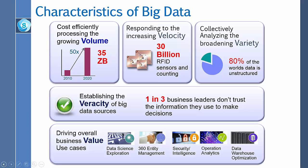The third characteristic is variety — 80% of the world's data is unstructured, and they come from a variety of sources, making this data varied in nature. The fourth is veracity: one in three business leaders don't trust the information they use to make decisions, so accuracy of data is an important factor. Finally, value — driving overall business value from various data sources and analyzing them is an important characteristic. Applying big data analytics and other tools, value can be extracted.